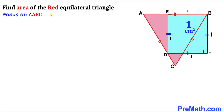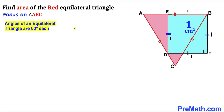Here's our next step. Let's focus on red triangle ABC. We know it is an equilateral triangle, and the angles of an equilateral triangle are 60° each. So angle A is 60°, angle B is 60°, and angle C is 60° as well.